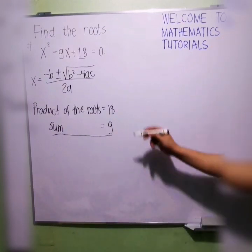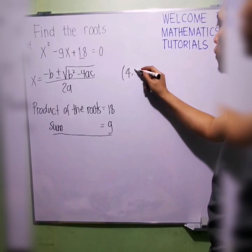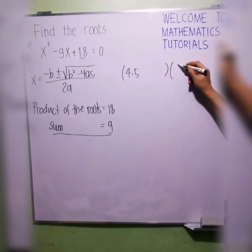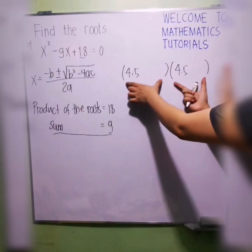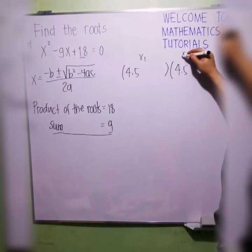We will get half of it. We will divide the sum into 2. We will have 4.5. The other is 4.5. This will now represent the two roots. We have x1 and x2.